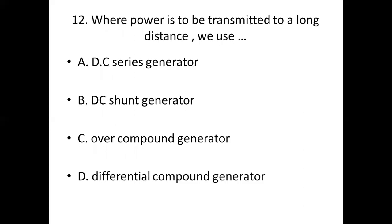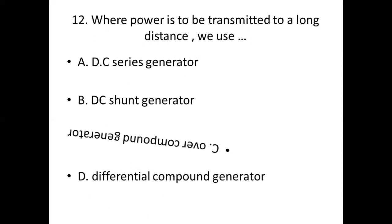Twelfth bit. Where power is to be transmitted to a long distance, we use dash. Option A: DC series generator. Option B: DC shunt generator. Option C: Power compound generator. Option D: Differential compound generator. Answer: Option C, Power compound generator.